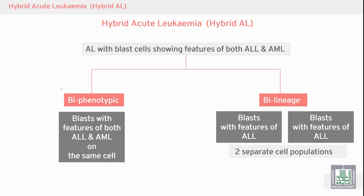Do we have acute myeloid leukemia and acute lymphoid leukemia together? Yes, this is what's called hybrid acute leukemia. Hybrid acute leukemia is acute leukemia with cells showing the features of both ALL and AML.